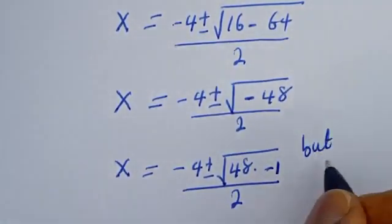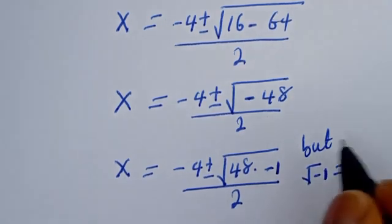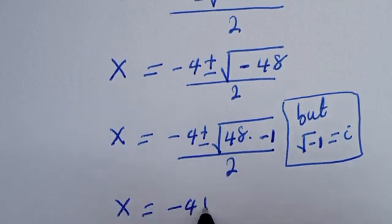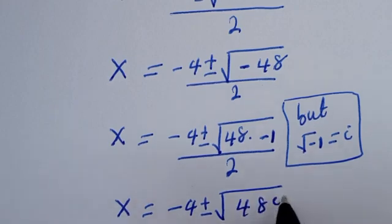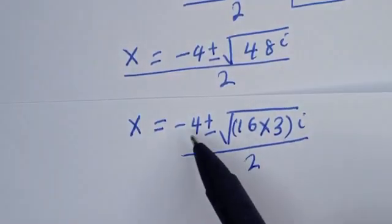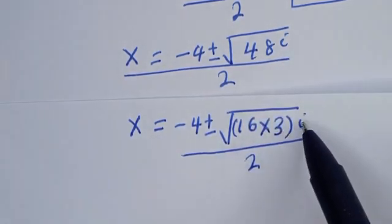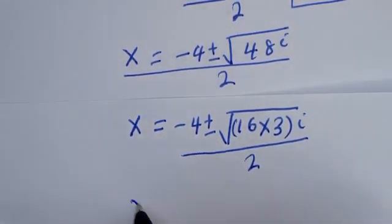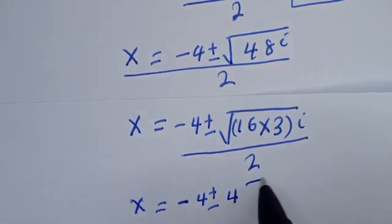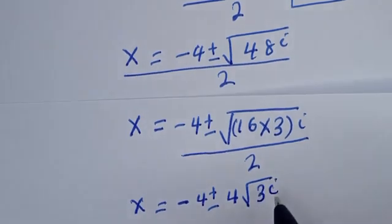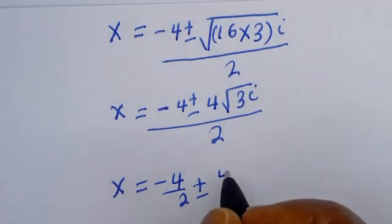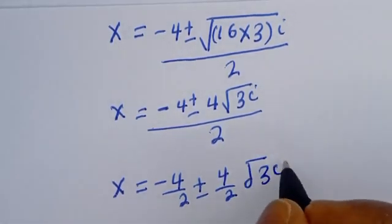We rewrite negative 48 as 48 times negative 1. Since the square root of negative 1 equals i, we get s equals minus 4 plus or minus square root of 48 times i, over 2. Simplifying √48 as √(16 times 3) equals 4√3, so s equals minus 4 plus or minus 4√3 i, all over 2.